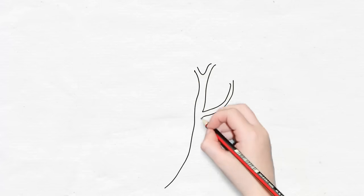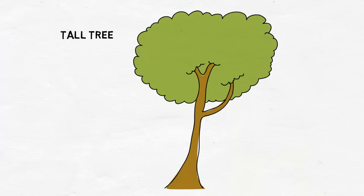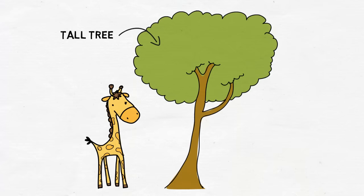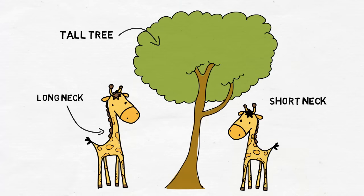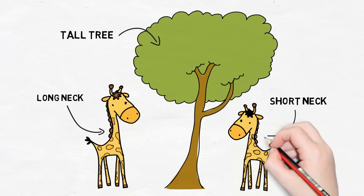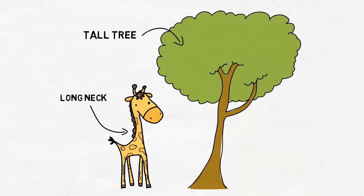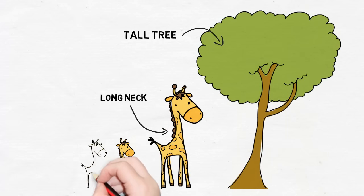In any environment, plants and animals from the same species show natural variation in their physical characteristics, such as neck length in giraffes. Darwin suggested that those plants and animals best suited to their environment are more likely to survive and pass on their characteristics to their offspring.